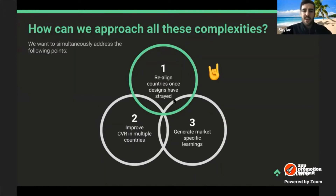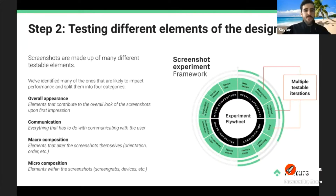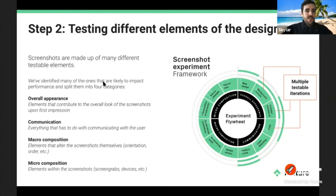We've managed to address one of the complexities: we now have a way to realign country designs once they've strayed, by developing a design reset for all countries and implementing it everywhere. Moving on to step two, which deals with testing different elements of the design — this is when the iterative testing comes into play.